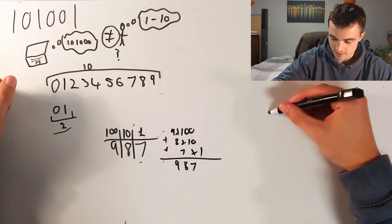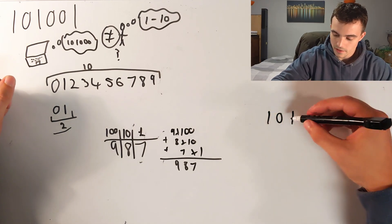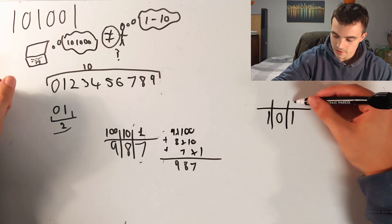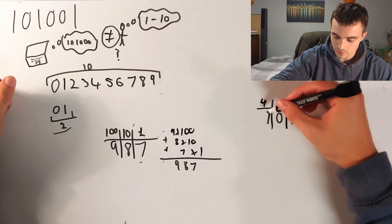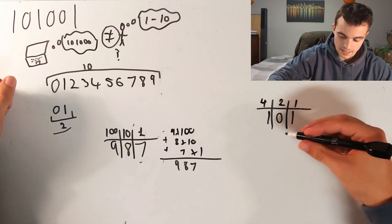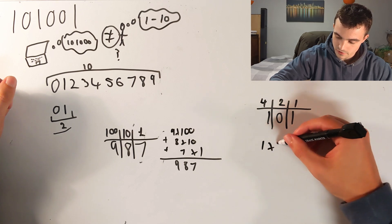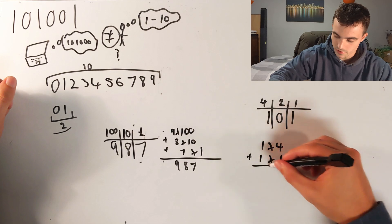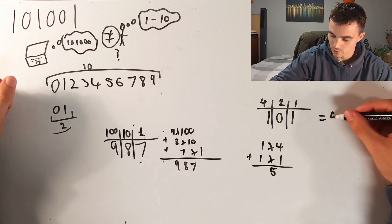In binary, say this binary number also has three parts. But we have one, two, and four. And this is like saying one times four plus one times one equals five. So this equals five.